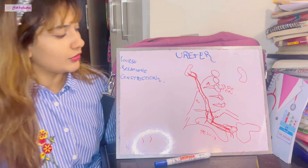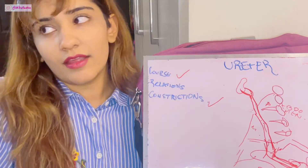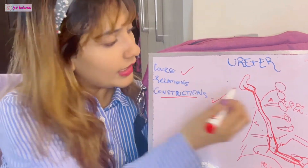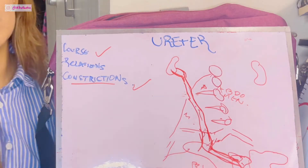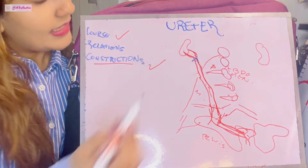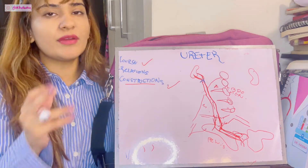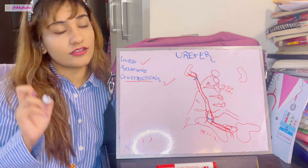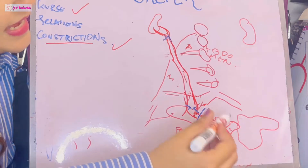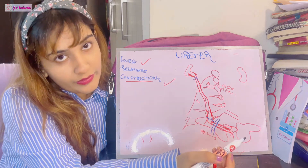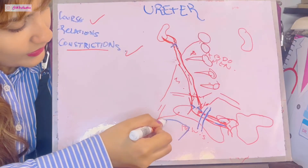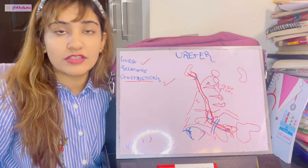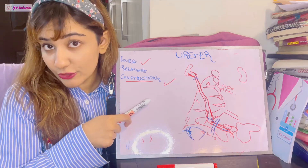Now let's talk about the constrictions of the ureter — the places where the lumen is narrowed. The first constriction is at the pelvi-ureteric junction, where the renal pelvis becomes the ureter. The second is at the pelvic brim, where the false pelvis ends and the true pelvis begins, at the level of the sacral promontory. The third constriction occurs where it is crossed by the ductus deferens in males and the broad ligament of the uterus in females. The fourth constriction is within the bladder wall, and the fifth is where it opens into the trigone of the bladder. Memorize these five constrictions — they will definitely come in your exam.